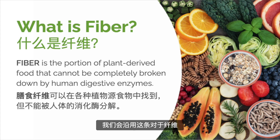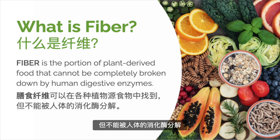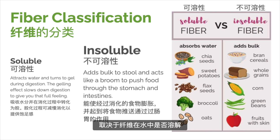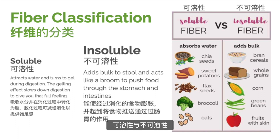For our purposes, we will stick with the definition of fiber being the portion of plant-derived food that cannot be completely broken down by human digestive enzymes. Now that we have a working definition of dietary fiber, let's discuss different types of fiber. Fiber can be classified as either soluble or insoluble, depending on whether it is soluble in water or not.